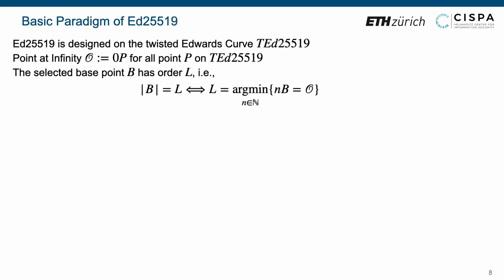To investigate the unforgeability of Ed25519, we first recall its basic construction. The Ed25519 is designed on the twisted Edwards curve, TED25519. Regarding this curve, there are two important points. The one is the point at infinity O, which equals zero times P for all points P on TED25519. The other is the selected base point B with order L. Here, the order of point B, denoted by the absolute value, defines the smallest positive integer n, such that n times B equals the point at infinity.